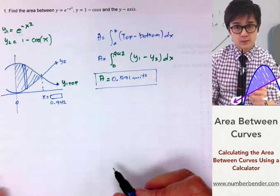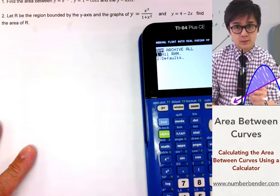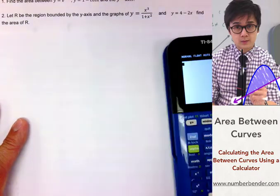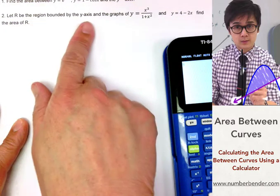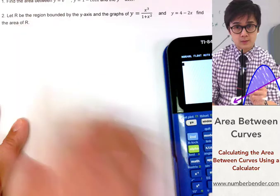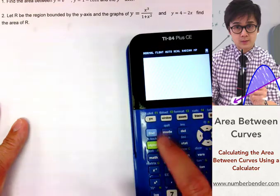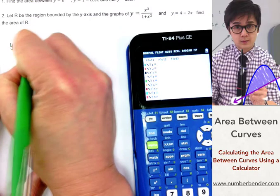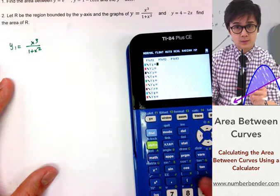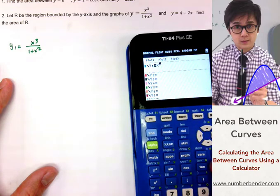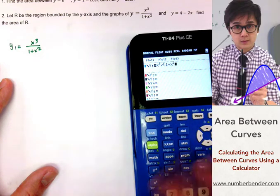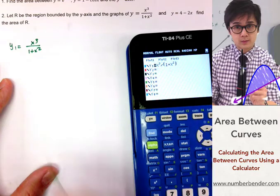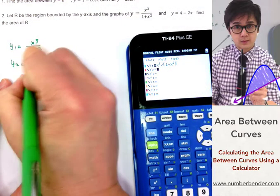Now let's go ahead and answer problem number 2. We have two functions bounded by the y-axis, we need to find the area of the region R. Y sub 1, let's define y sub 1 as x³ divided by (1+x²). And y sub 2 is 4-2x.